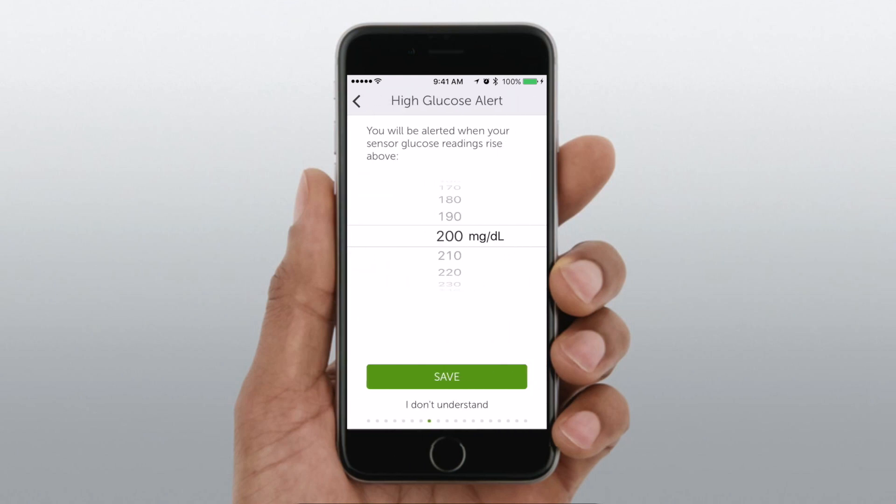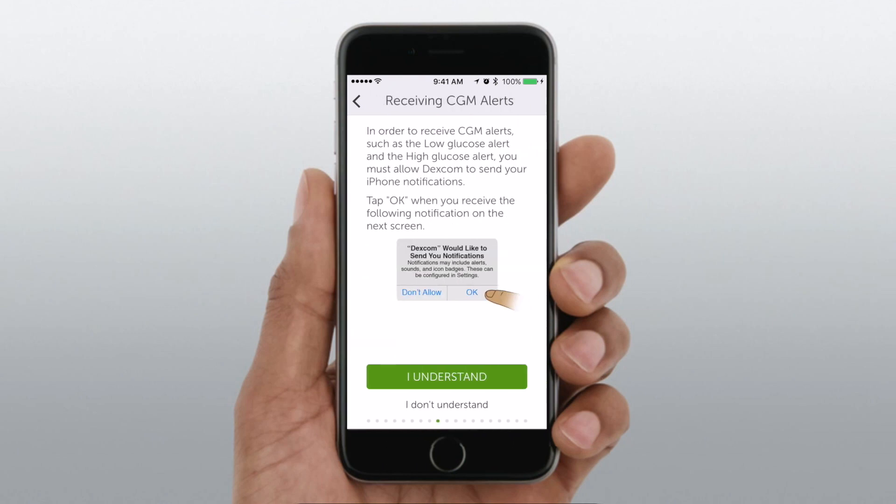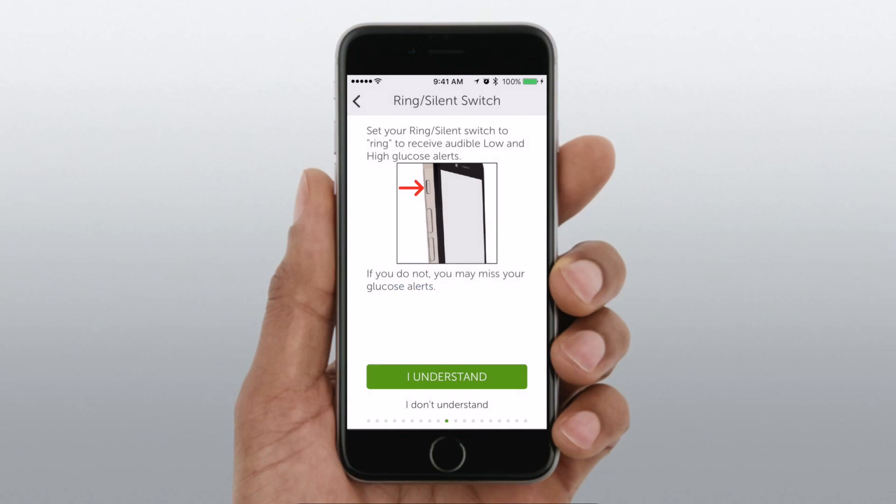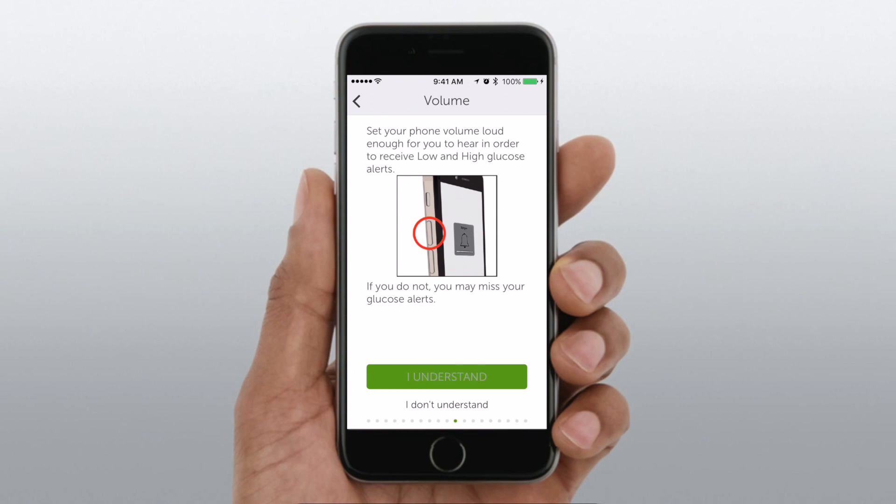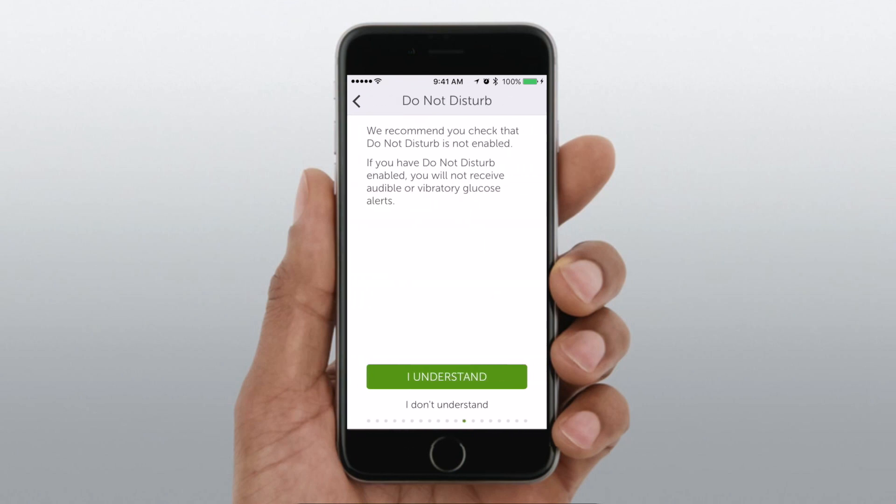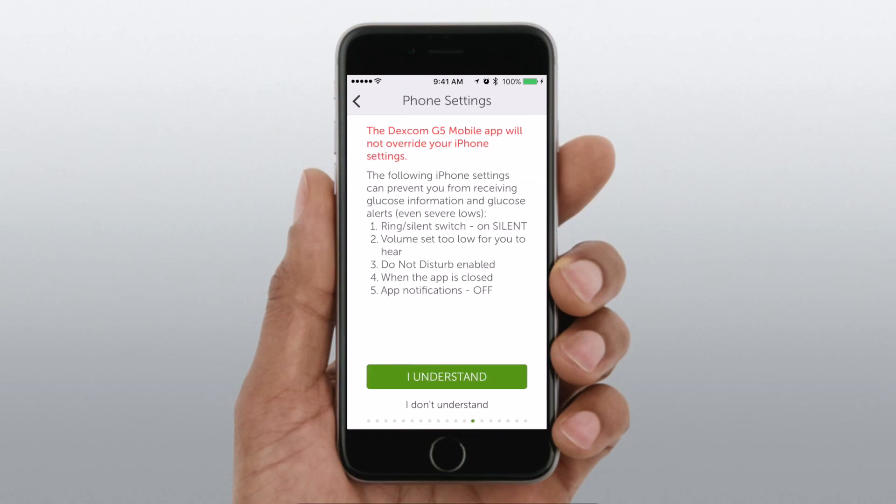We're going to choose our low glucose alerts such as 70. We're going to set our high glucose alert. For me, I'm going to put 200. And then we're going to be notified about accepting those push notifications. We're going to be notified, hey, if you have your phone on silent, you are not going to get those low alerts. So do not use do not disturb. Make sure your volume is up. All this stuff, especially for overnight. So if you have the sensor on there before your receiver would wake you up, now you kind of have to use your phone. So if your phone is on mute, you're not going to get those warnings.